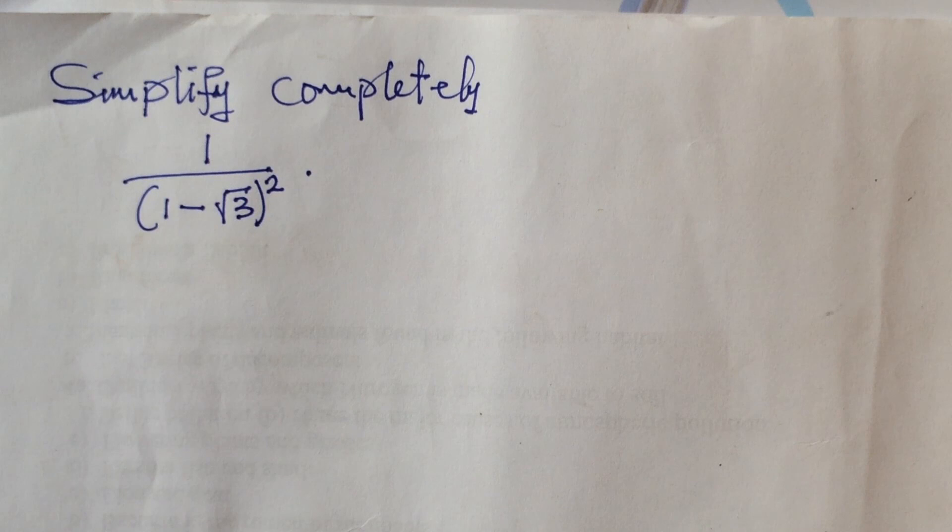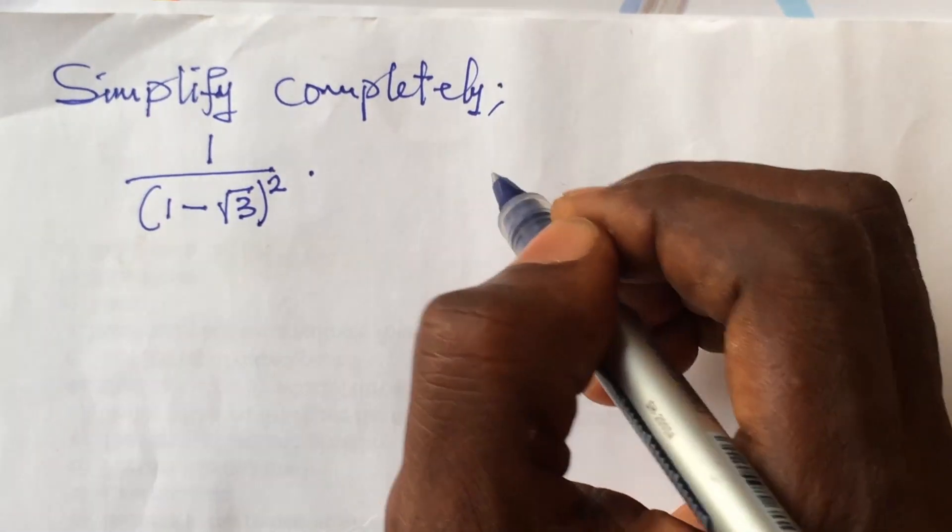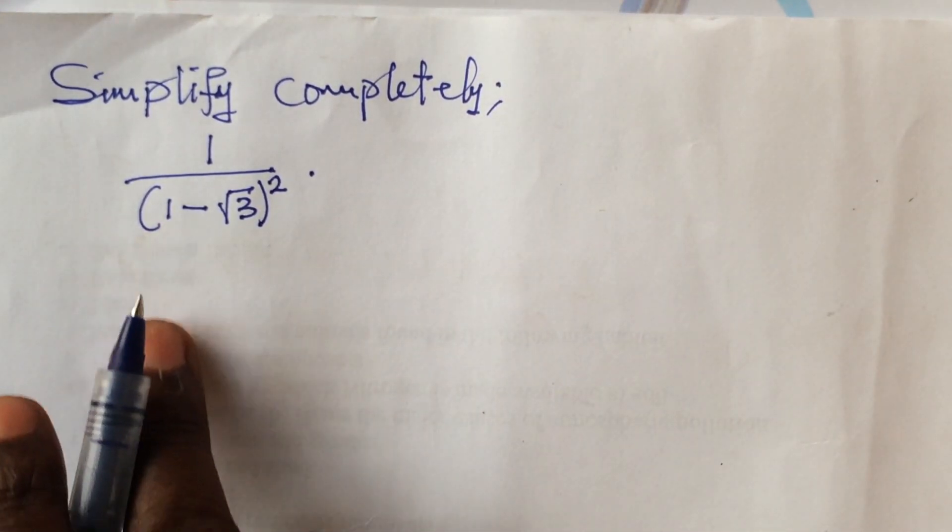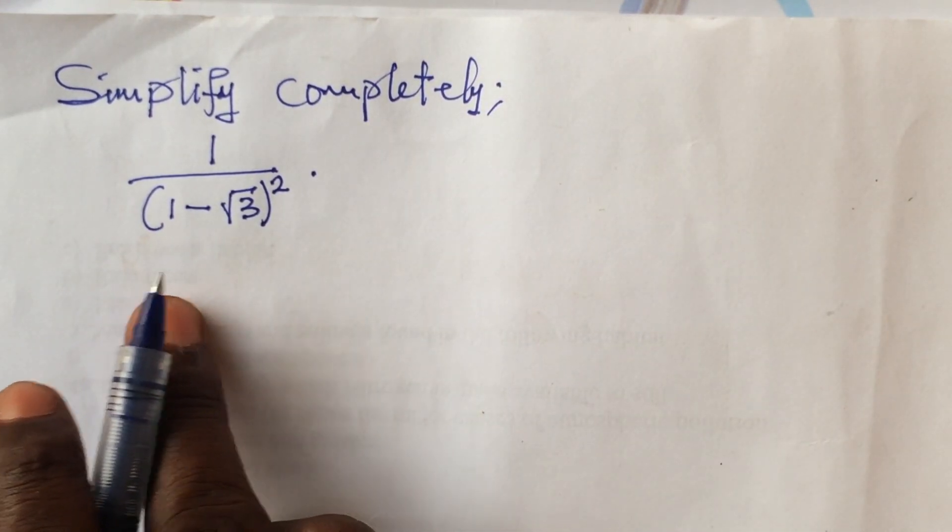Like the one you're about to watch right now. The question says: simplify completely 1 over (1 minus root 3) all squared.